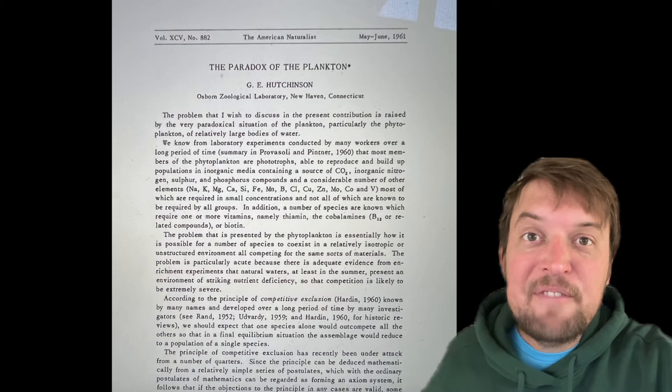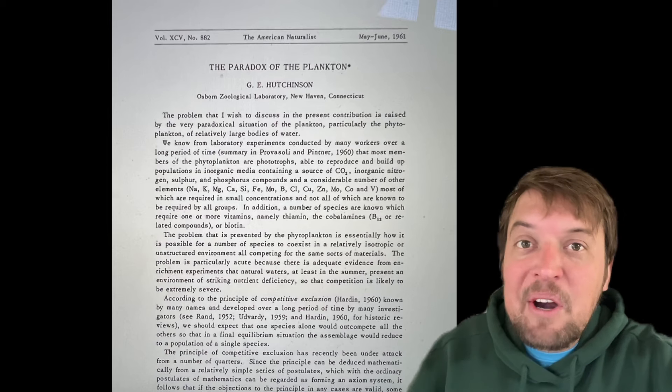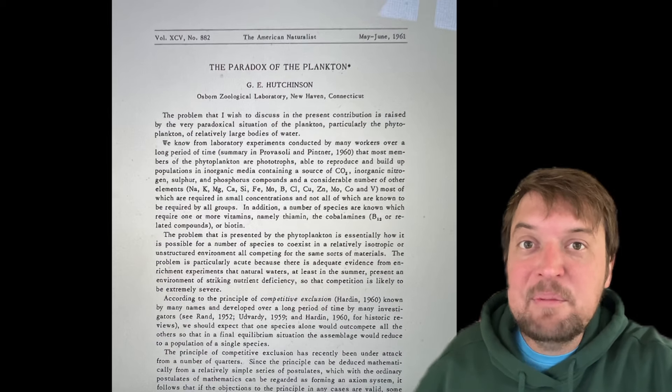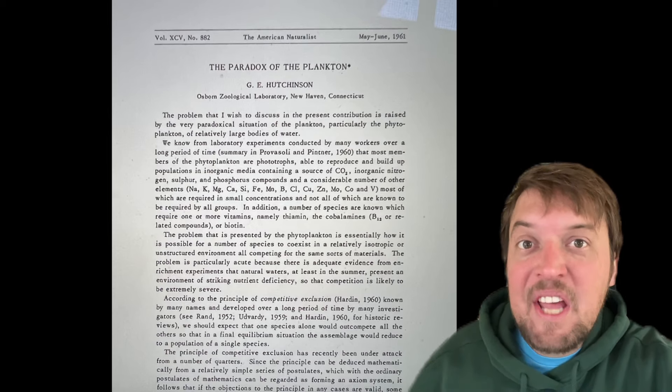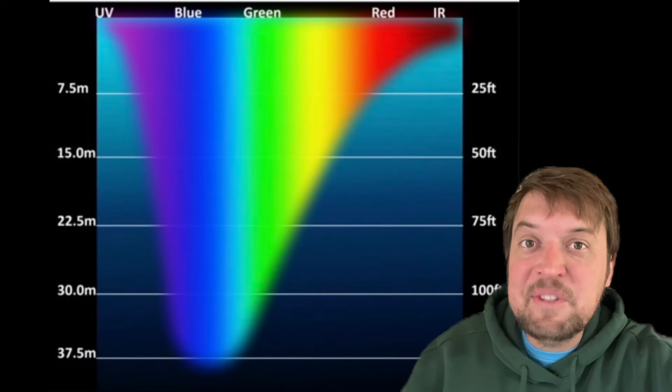Alright, back to plankton. Scientists have been trying to find ways to explain the diversity of plankton since 1961. That's when the paradox of the plankton was first described by British ecologist G. Evelyn Hutchinson. He suggested a few ways to resolve the paradox himself.